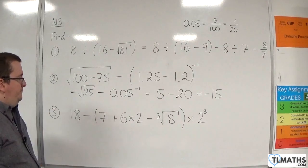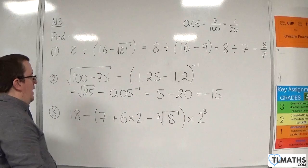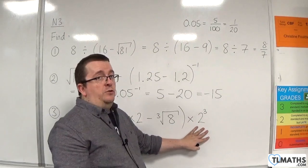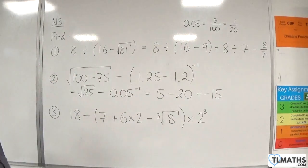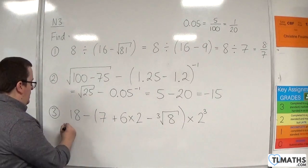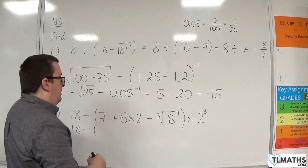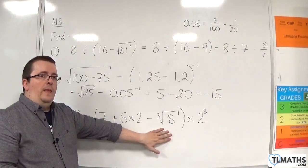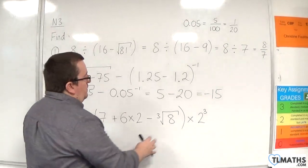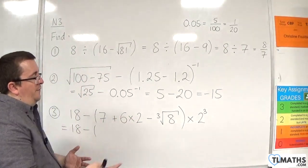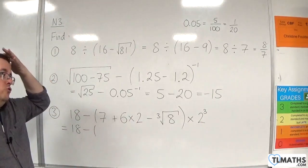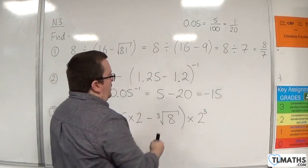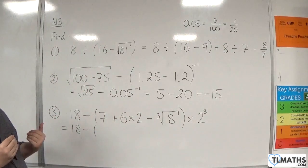Number 3. We've got 18 take away, and in a bracket, we have 7 plus 6 times 2, take away the cube root of 8, and then on the outside we've got times 2 cubed. We've got to do what's in the bracket first. Inside the bracket, we've got multiplication, we've got addition, subtraction, and we've got cube root as well. We've got to do the cube rooting first. Then we'll do the multiplication. Now, because we've got the subtraction in between, it doesn't actually matter which order I do this. I could do the 6 times 2 and the cube root of 8 in the same step, and it won't make any difference.